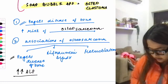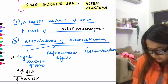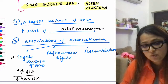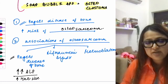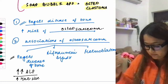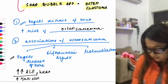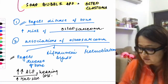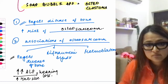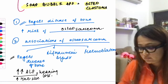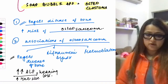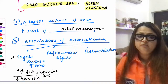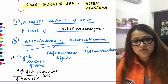Another hint for Paget's disease is an increase in hat size — the patient will complain that their helmet no longer fits or their hat is now too tight. These patients also have hearing loss because the ear ossicles can be involved in Paget's disease.